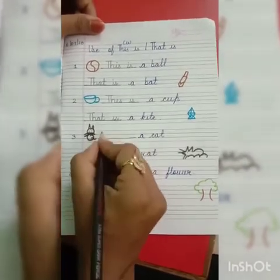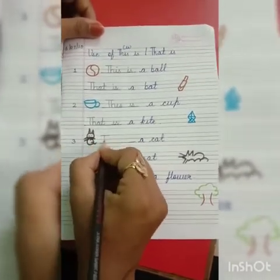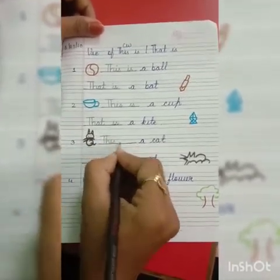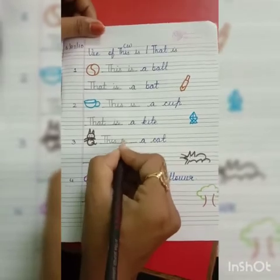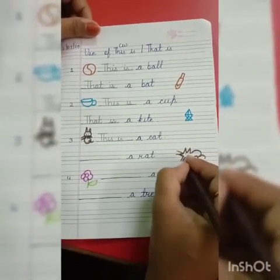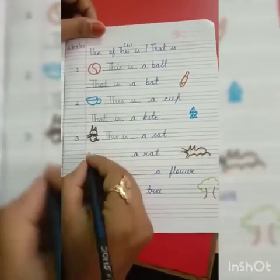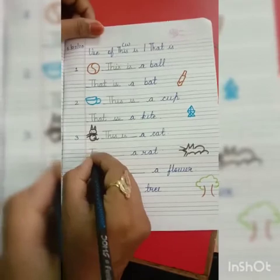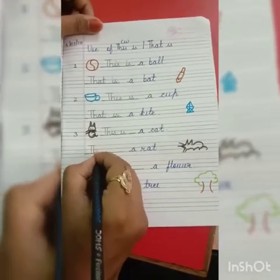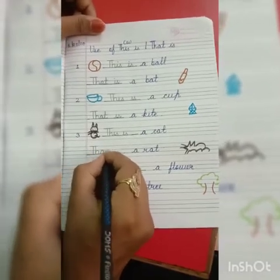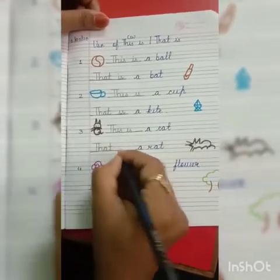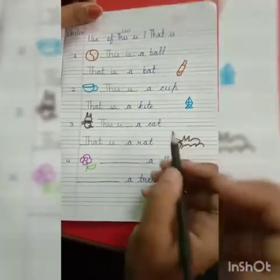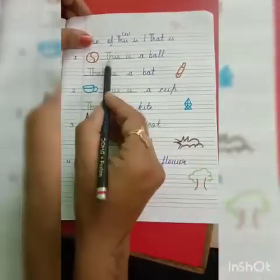Cat — it's near. Very good. This is a cat. Rat — rat is far. So that is — T-H-A-T, that. I-S, is. That is a rat. Always remember.